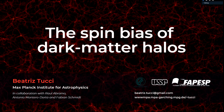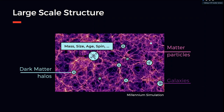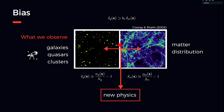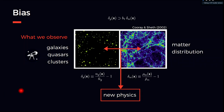I will first introduce secondary bias, then cover low-mass and high-mass spin bias, briefly comment on how to probe spin bias in observations, and give conclusions. We have been studying the distribution of dark matter halos and galaxies as cosmological tracers of the underlying matter distribution. These objects differ in properties such as mass, size, age, and spin. We connect their distribution to the matter distribution via bias expansion, writing it by considering all relevant operators at each order. The bias parameters encode a lot of physics. Halo bias depends primarily on halo mass — the higher the mass, the higher the linear bias.